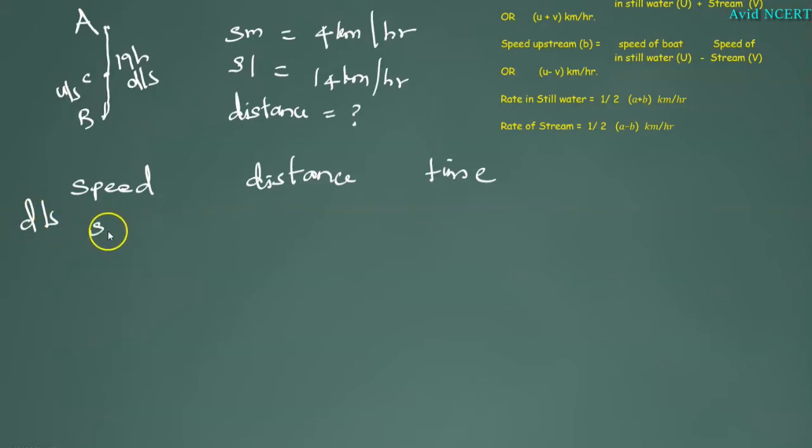the speed is SL plus SM and the distance travelled is X for downstream, A to B. Let the A to B distance be X. For upstream,